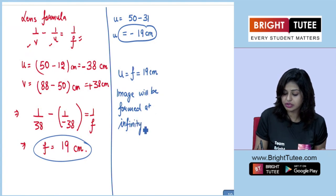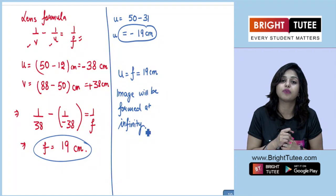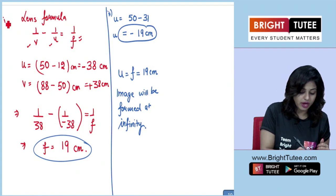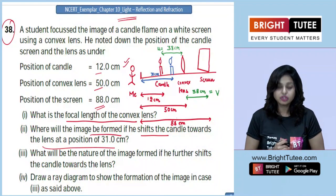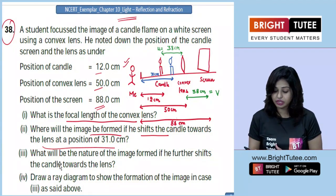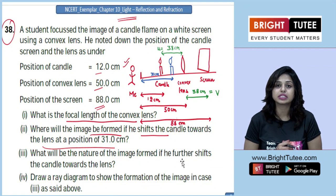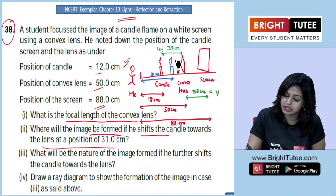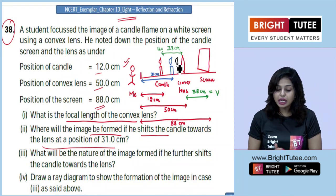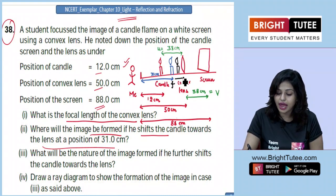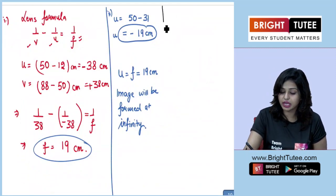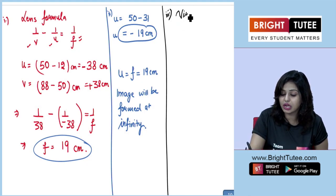This is a trick question to test whether you know where images are formed using a convex lens. Moving to part 3: what will be the nature of the image formed if the candle is shifted even further towards the lens? The examiner is asking about the case where the candle is placed between F and O. When this happens, we get a virtual and enlarged image.